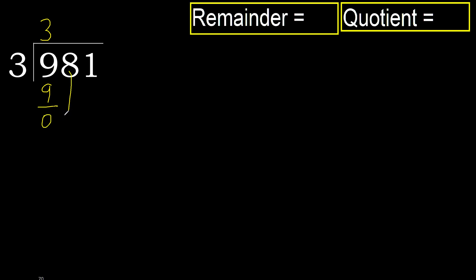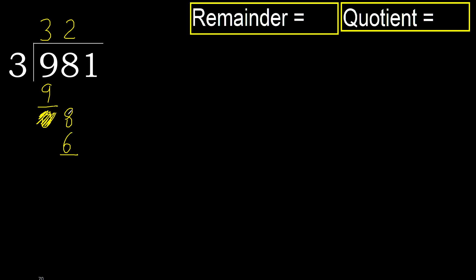Next, bring down the 8. 3 multiplied by 3 is 9, which is greater. Multiply by 2: 6 is not greater. Subtract.